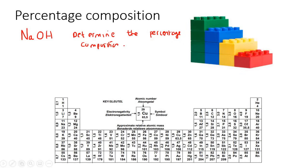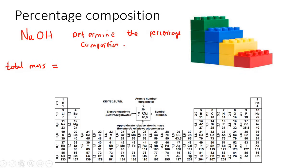For sodium (Na), you first have to calculate the total mass. From the periodic table, that's sodium which is 23, plus 1 oxygen which is 16, plus 1 hydrogen which is 1, and that gives you a total of 40.